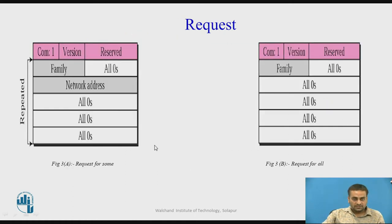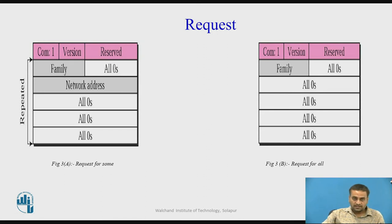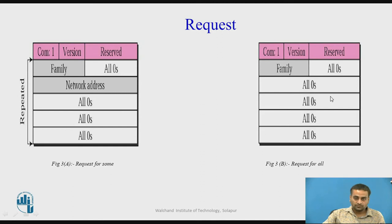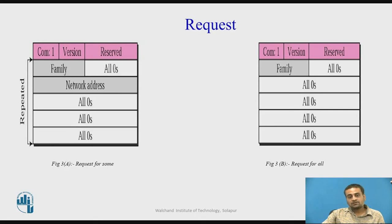The request message has value 1 in the command field. A request message is generated when a router comes up or when a timer expires. A request message can be generated for some specific networks or to request all network entries from a router. When the request message is for all entries, the network address field contains all zeros; when it is for a specific network, the network address of that specific network is placed in this field.